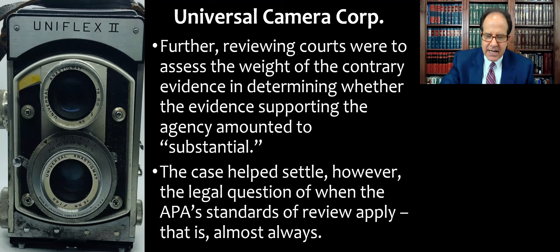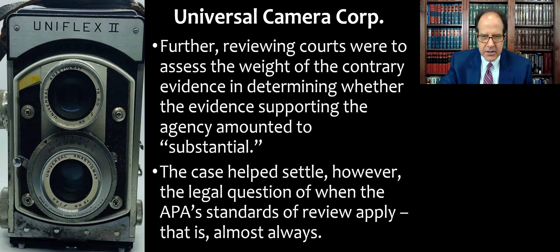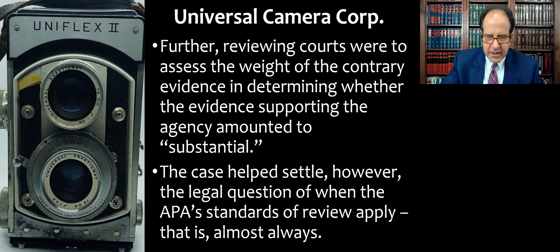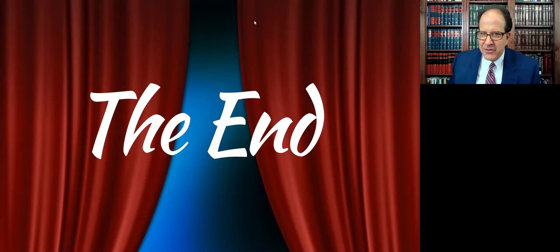Universal Camera set the stage for the substantial evidence test still giving courts a lot of latitude to go through the record and examine what the agency concluded, then decide: what about the contrary evidence? Is it really powerful evidence, or does every record just have a little bit of evidence pointing in different directions? The case at the time was really significant because it settled the legal question of when the APA's standards of review apply — which is basically almost always. That concludes our lecture about Universal Camera Corp versus the National Labor Relations Board.